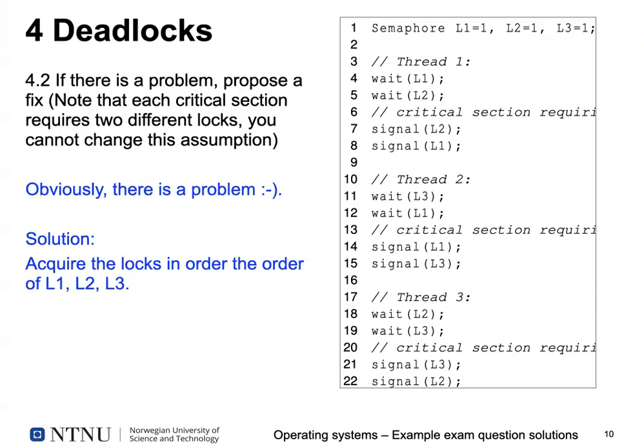The next part asked: if there is a problem, propose a fix. With the constraint that each critical section requires two different locks and you cannot change that assumption, the solution is simply to have all threads acquire their locks in order — L1, L2, L3 — and release them in the opposite order. That would solve the problem and prevent any deadlocks.